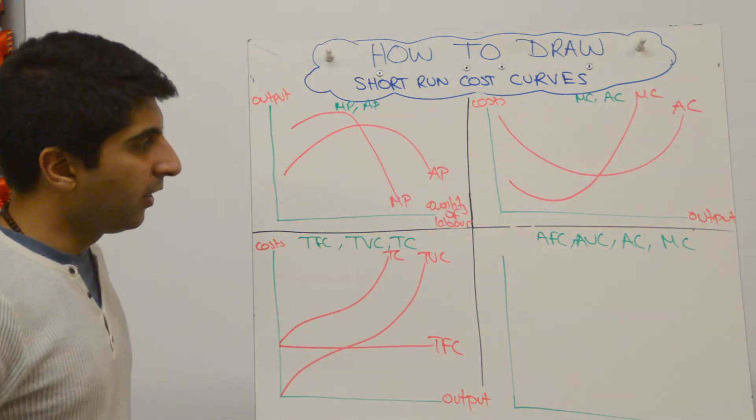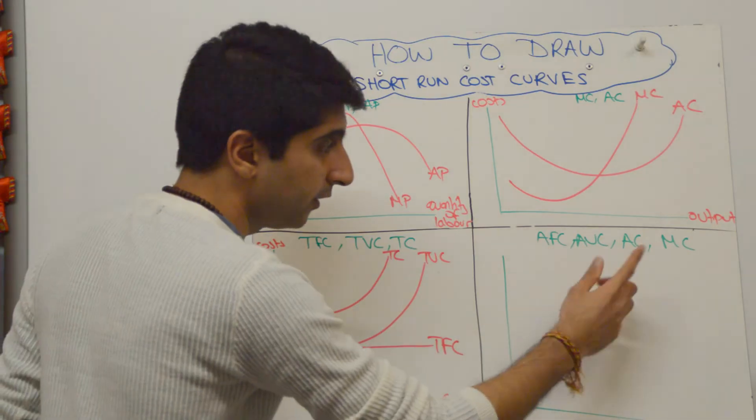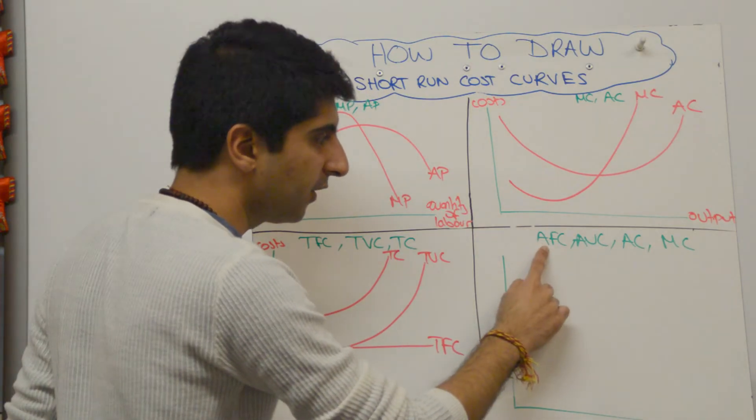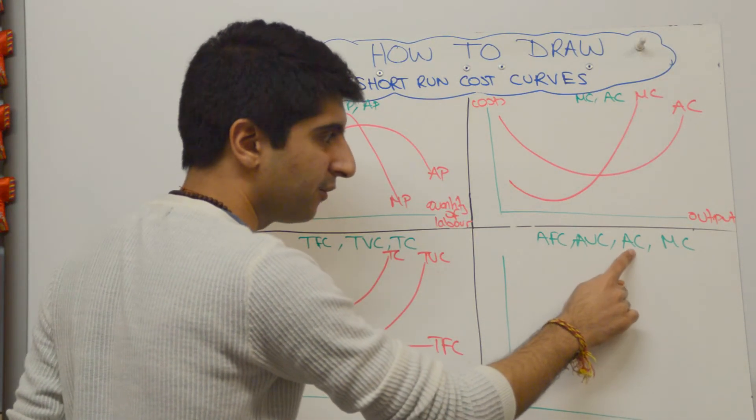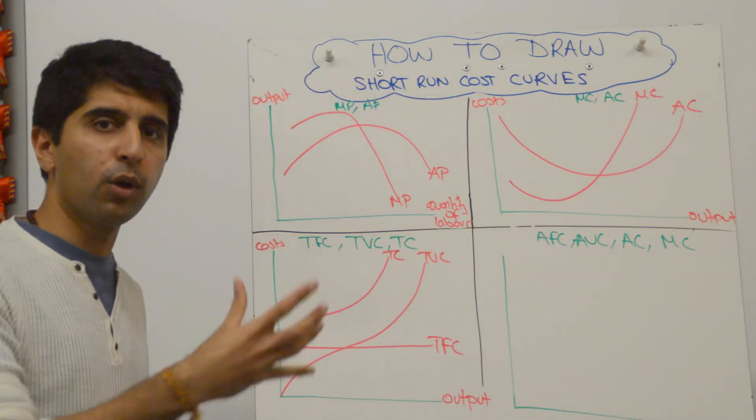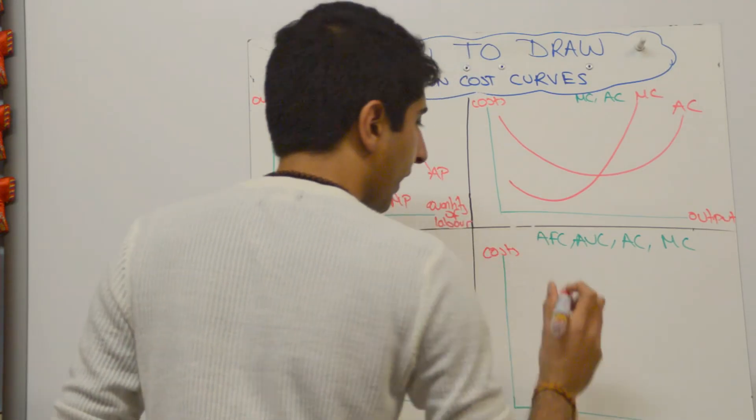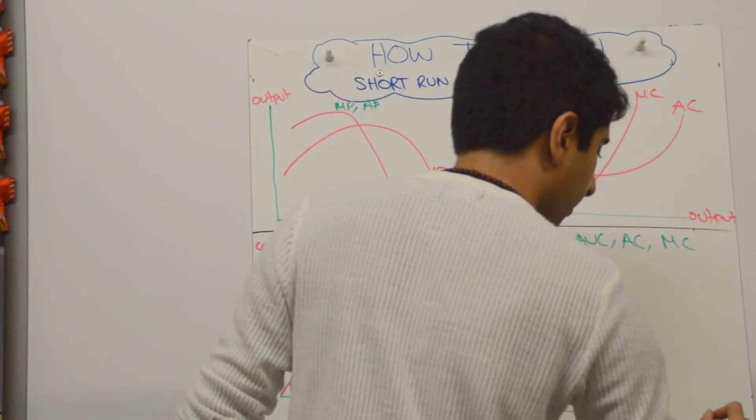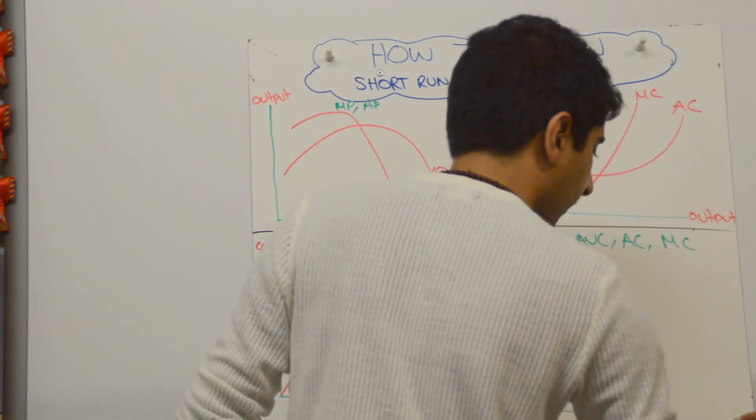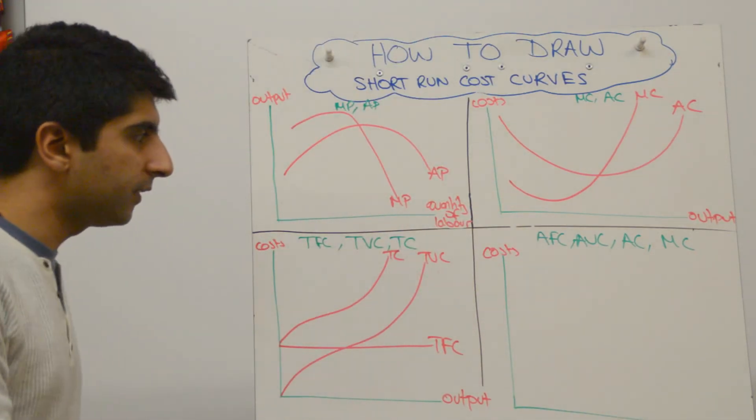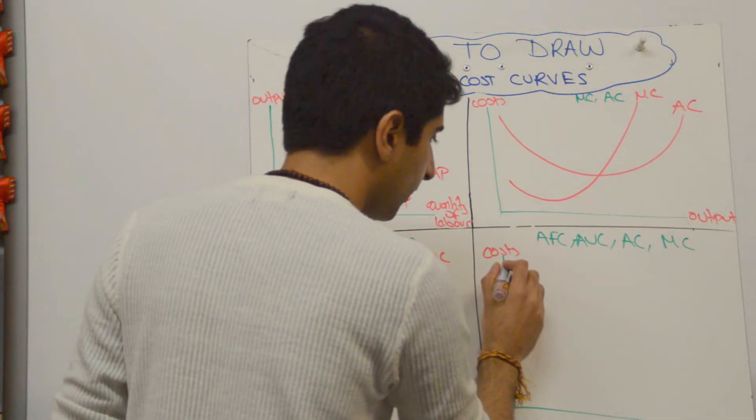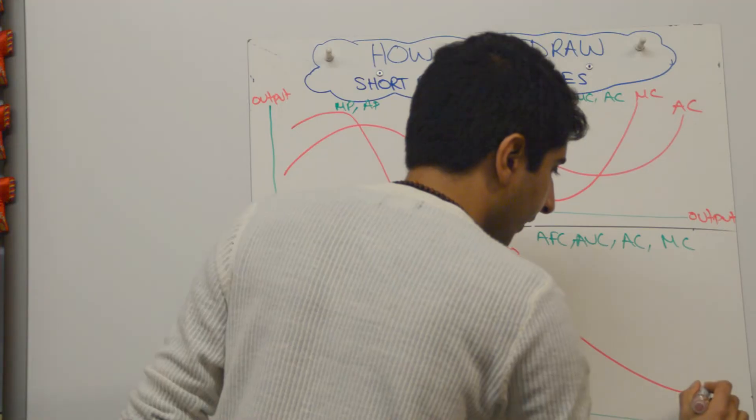The last one I want to draw is this one—this is quite useful too. We show average fixed cost, average variable cost, average cost, and marginal cost all on one diagram. So they're all costs, so it's going to be cost on the y-axis, and it's going to be output or quantity on the x, like this. Start simple, so average fixed cost to start with—look something like that.